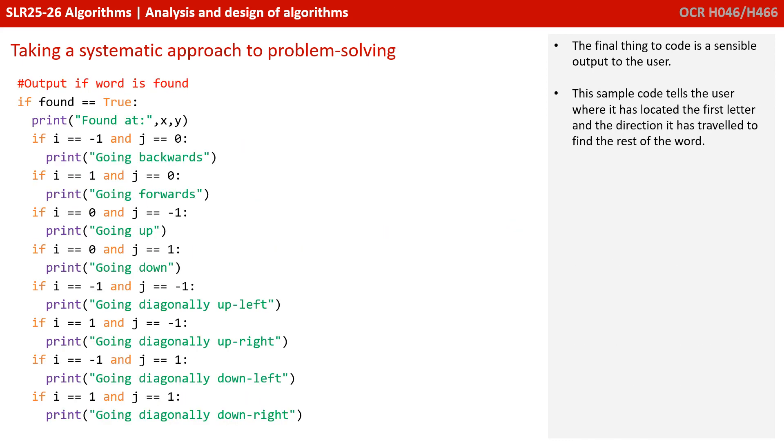The final thing to do is to provide some sensible output. It would be handy if the program told us where it found the first letter of the word, and then which direction to look for the rest of the letters. So this little part of the program tells you the x and y coordinates where the first letter is found, and then whether you're going backwards, forwards, up, down, or diagonally in order to find the rest of the word.